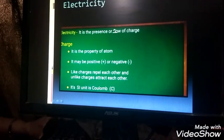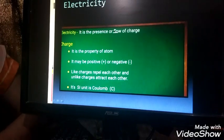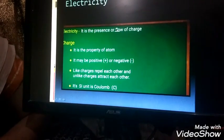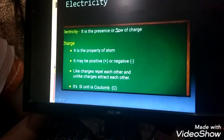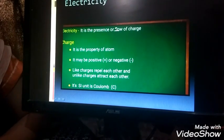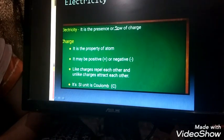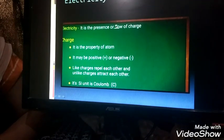You know that an atom contains electrons, protons and neutrons, where electrons are negatively charged particles and protons are positively charged particles. So this positive and negative is known as the charge.